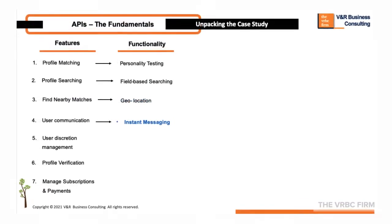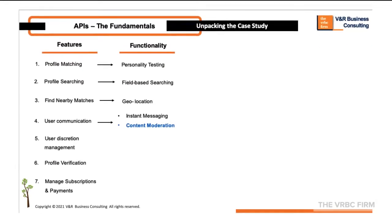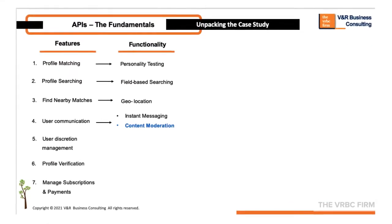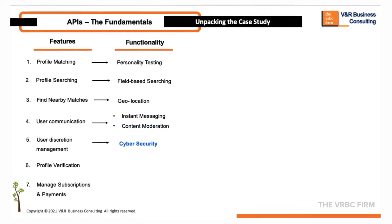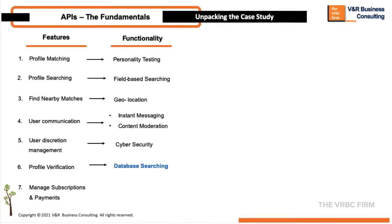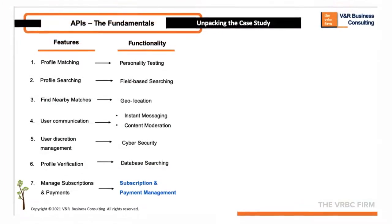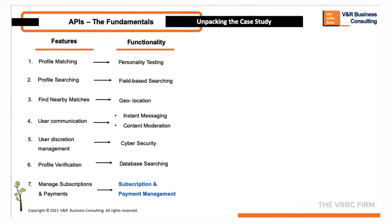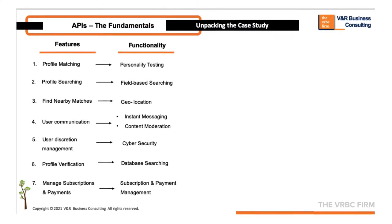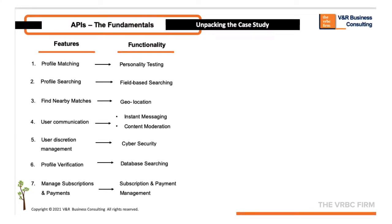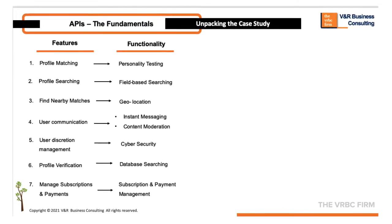We carry on in a similar fashion identifying the primary functionality required to build our features. Now let's unpack the primary functionality identified to explore how an API works in practical terms, as well as the different forms it can take.